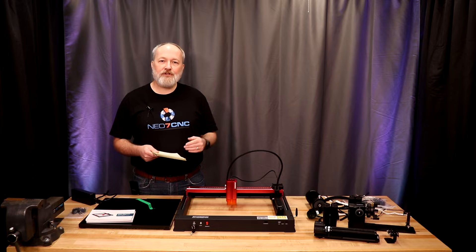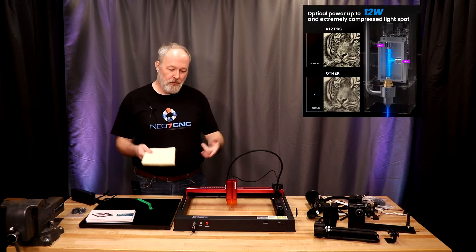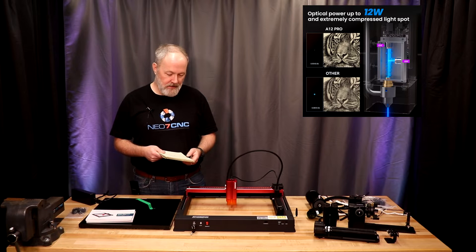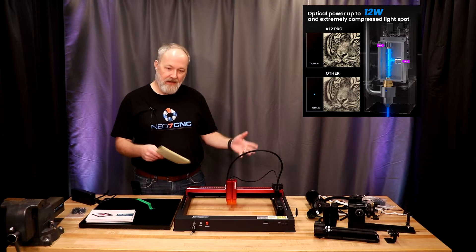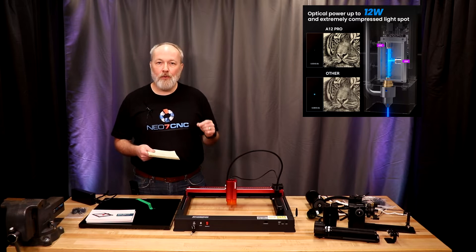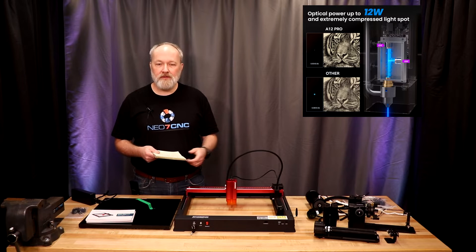This is a 12 watt machine as described with the A12 Pro. They do have a 6 watt machine and a 24 watt machine as well that's in the same family. The dot size on this is very small at 0.06 millimeters by 0.06 millimeters.